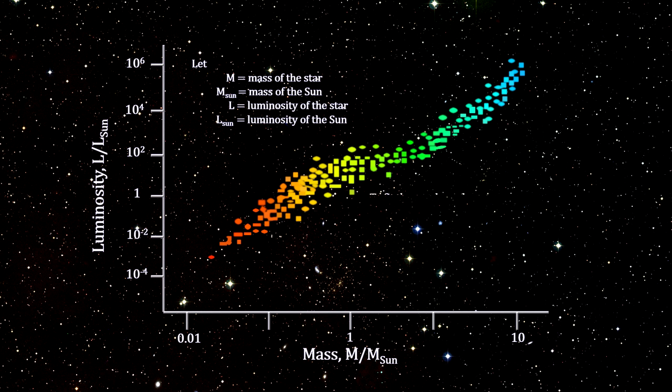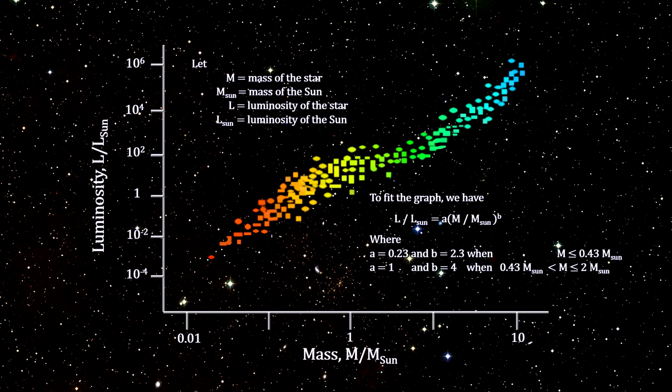Note that this is an empirical relationship. We don't start with an equation and plot its graph. We observe events to create the graph and then find an equation that would have created a graph that looks like the one or fits the one we observed.